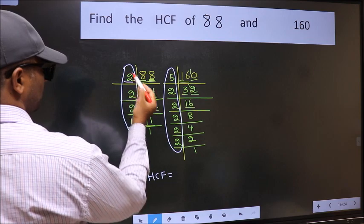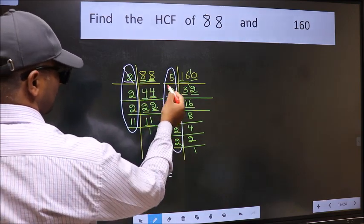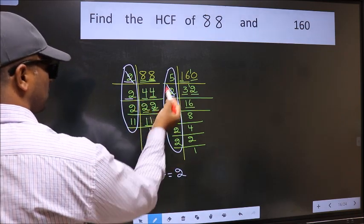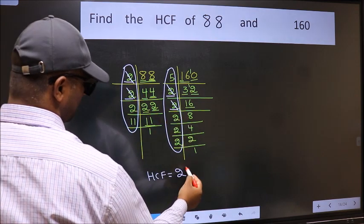Starting with the number 2. Do we have 2 here? Yes. So cut 2 right here. Next number 2. Do we have 2 here? Yes. So cut 2 right here.